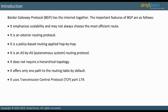BGP does not use its own protocol as the IGPs we have studied. Instead, it uses TCP port 179. As a result, BGP can take advantage of TCP windowing to send updates reliably and efficiently. At boot, routers exchange full updates. Only triggered partial updates are sent after that. There are no periodic updates.